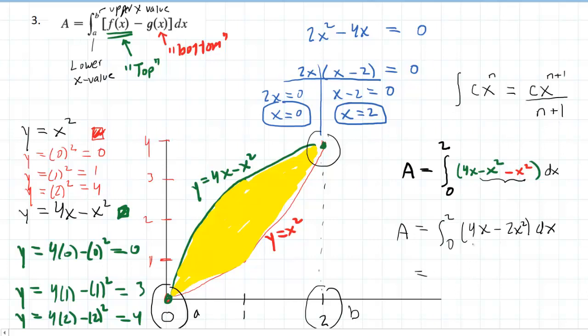So following that rule along, we're going to have in the first term 4x raised to the power of 2 over 2 minus 2x raised to the power of 3 over 3. And this will be evaluated from a lower bound of 0 to an upper bound of 2.